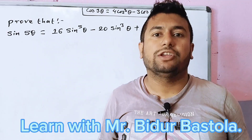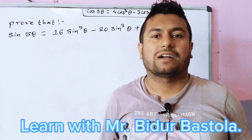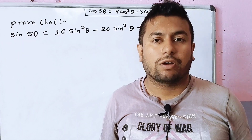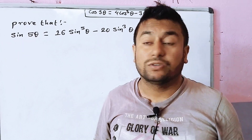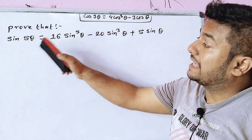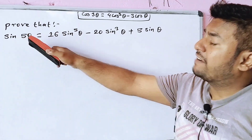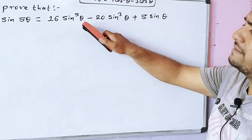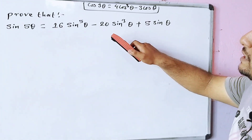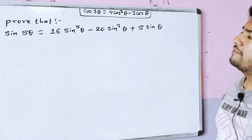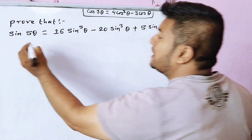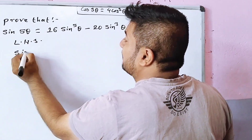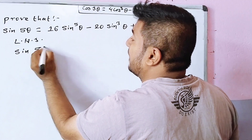Welcome to my YouTube channel. Today I will take a question of trigonometry. Prove that sin 5θ is equal to 16 sin⁵θ minus 20 sin³θ plus 5 sinθ. Now we will take a question of sin 5θ.